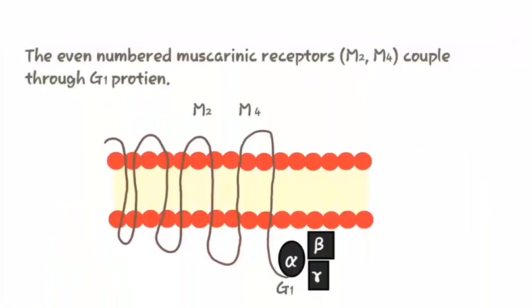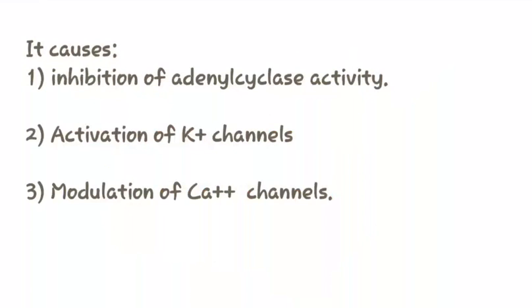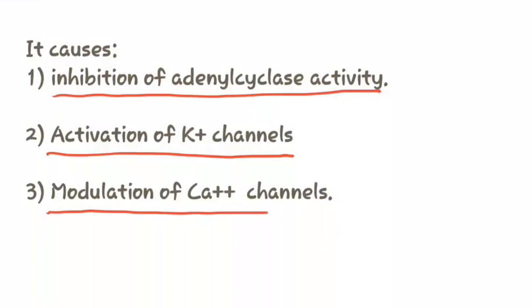Now let us see the mechanism of even numbered muscarinic receptors. The even numbered muscarinic receptors (M2 and M4) couple through G1 protein. The complex formation of even numbered muscarinic receptors with G1 protein causes inhibition of adenyl cyclase activity, activation of K plus channel, and modulation of calcium channels.